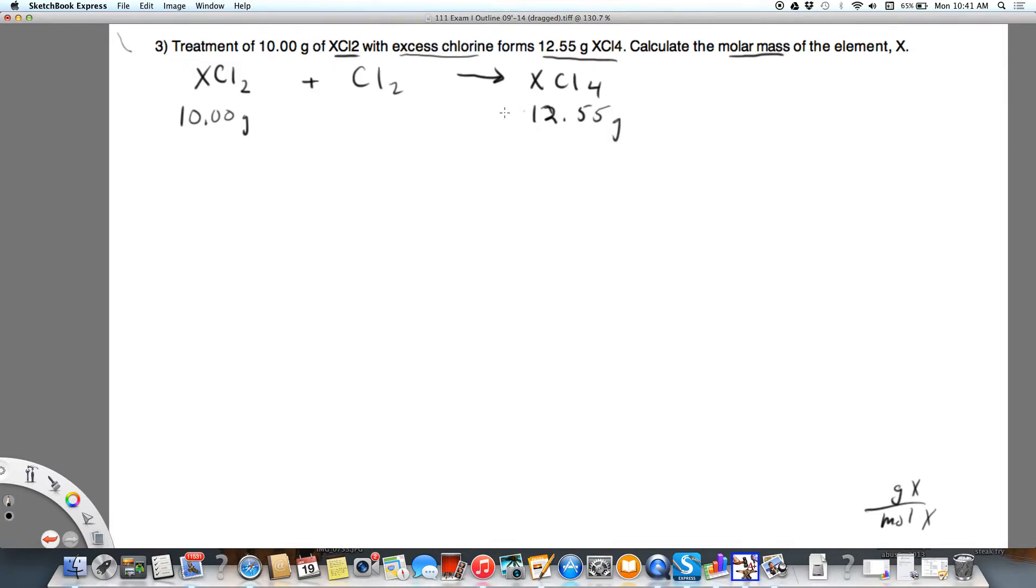So if we subtract, that will tell us how much chlorine we added. So the first thing I'm going to do, I can't necessarily figure out grams of X yet, but that's what I'm going to do indirectly here. So first I'm going to figure out grams of chlorine that were added. So I'm going to take 12.55 grams XCl4, and I'm going to subtract 10.00 grams XCl2, and that gives me 2.55 grams of chlorine.